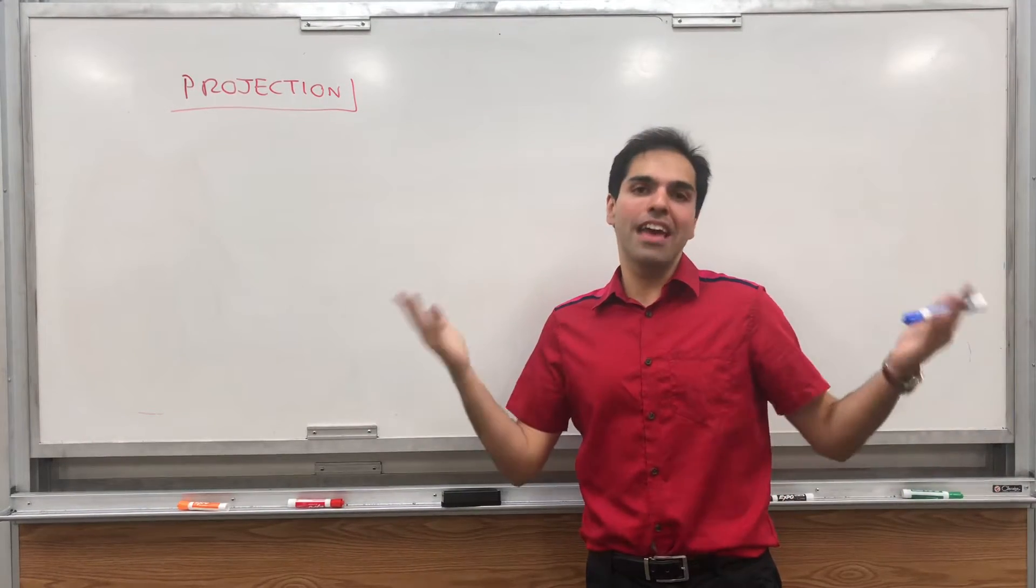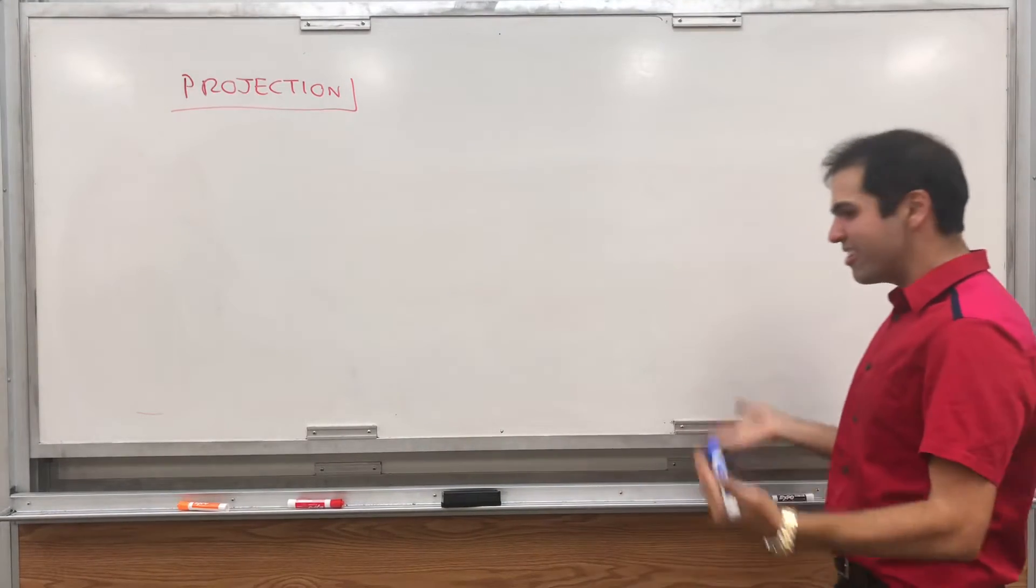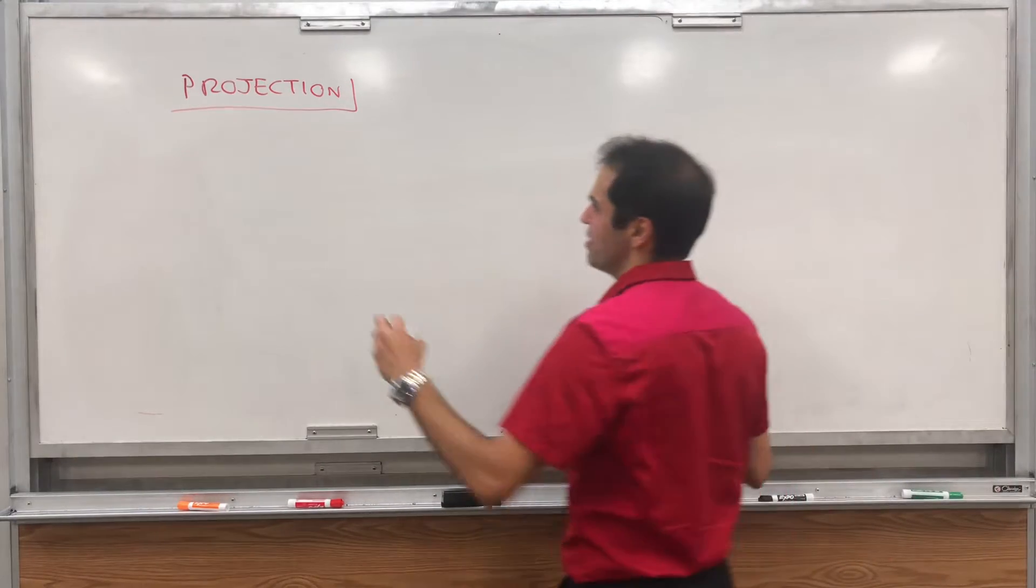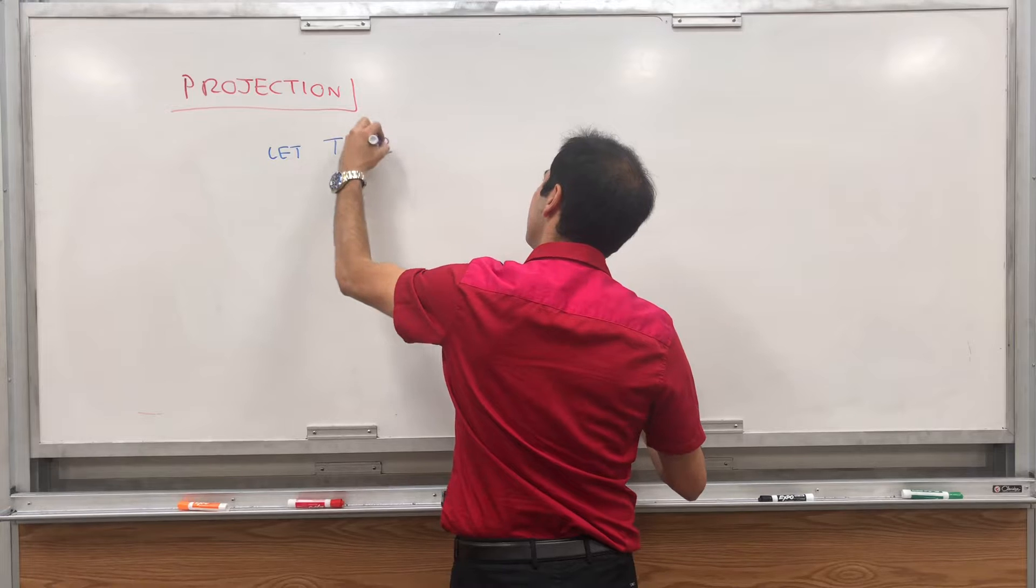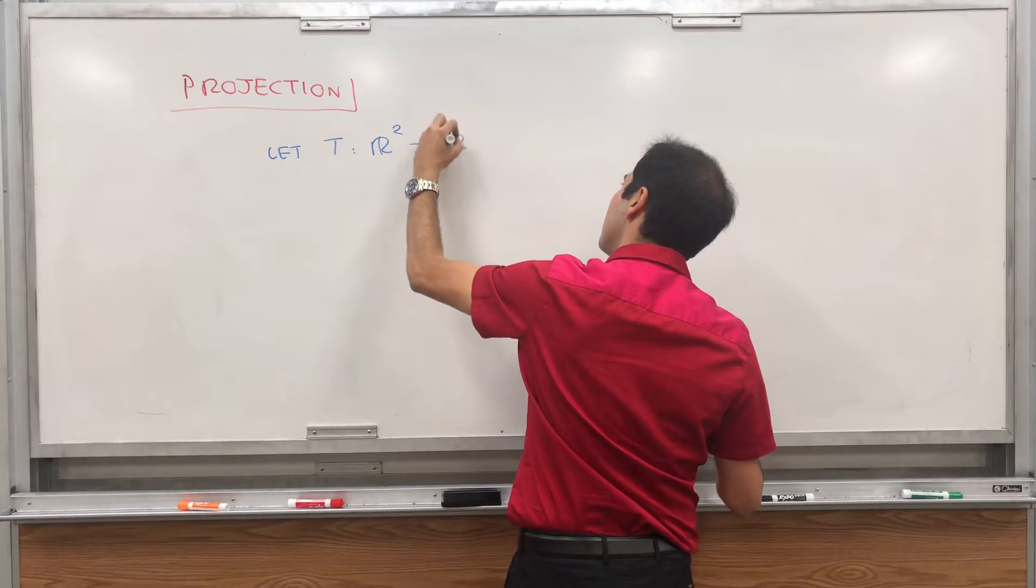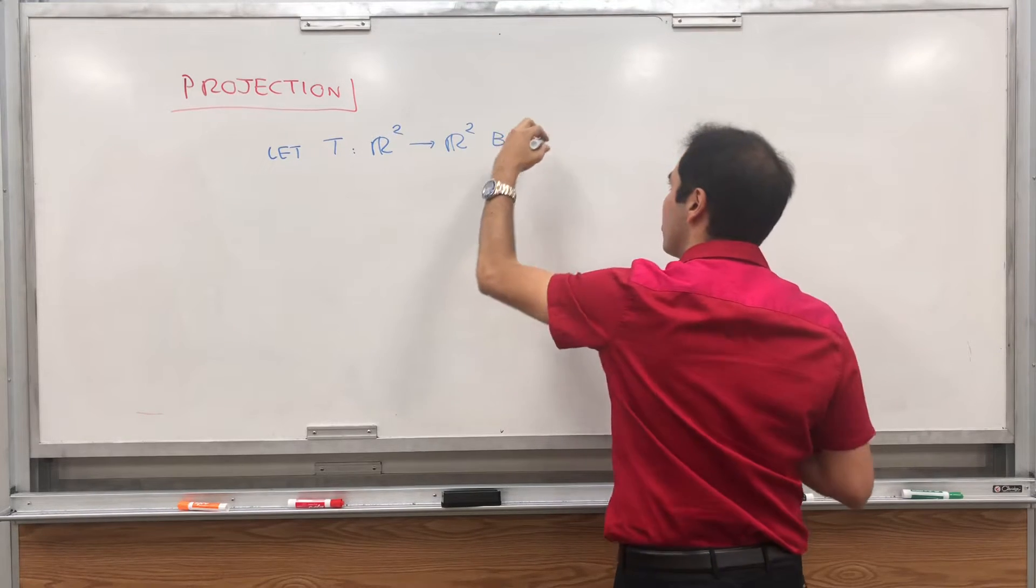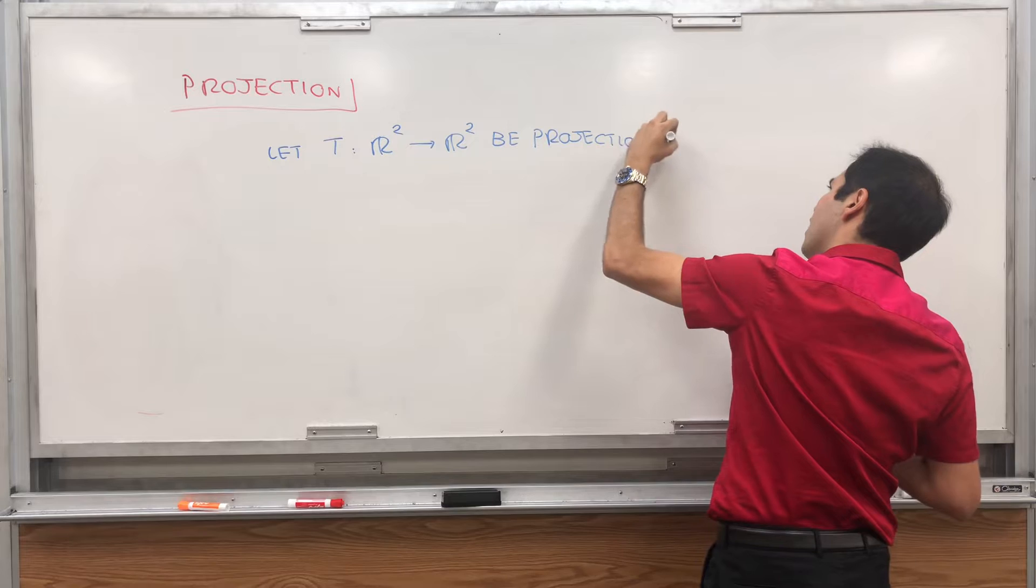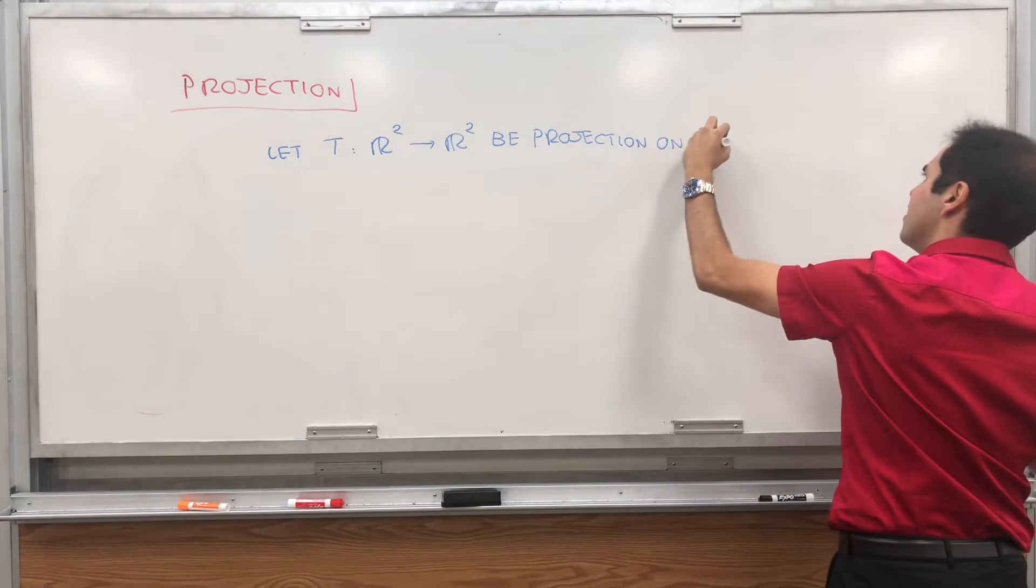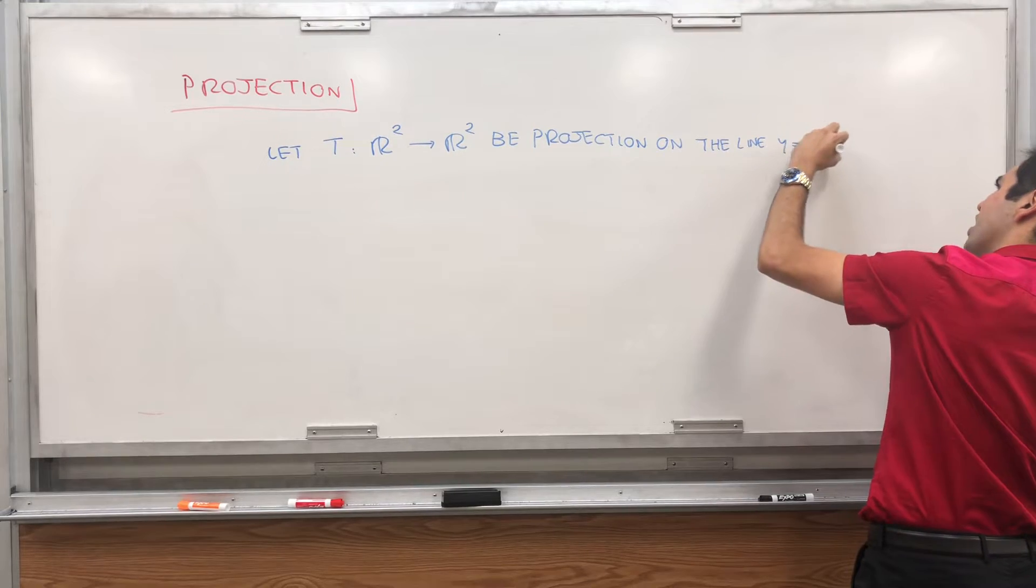And now you may ask, what about projection on a line? It turns out it's exactly the same idea as before. So let T go from R2 to R2, the orthogonal projection on the line y equals 2x.